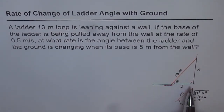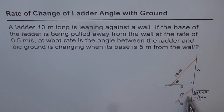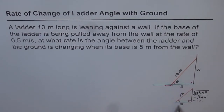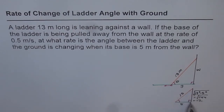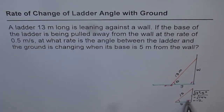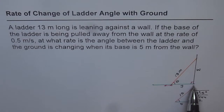The diagram shown here represents the situation. I have made a similar triangle. Since we need to find the rate of change of this angle at an instance where this distance is 5, the ladder length will always remain 13. So this is 5, and the perpendicular will be √(13² - 5²) = √144 = 12. So this side is 12. That small triangle represents the instance when the foot of the ladder is 5 meters from the wall.